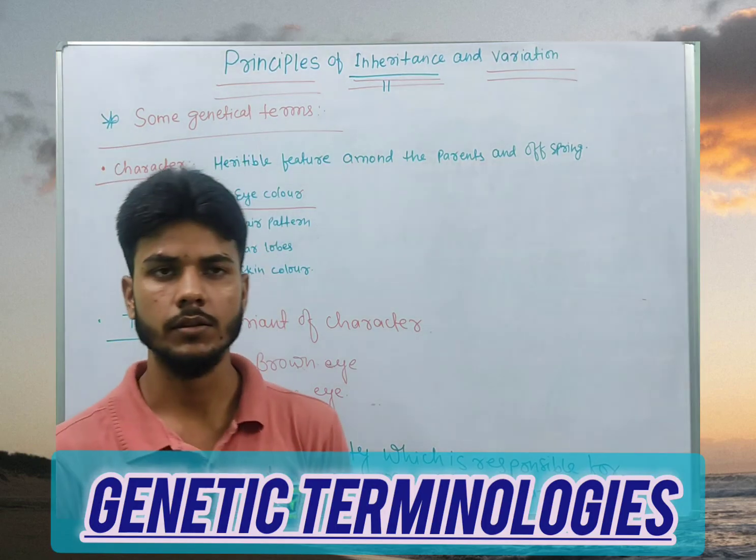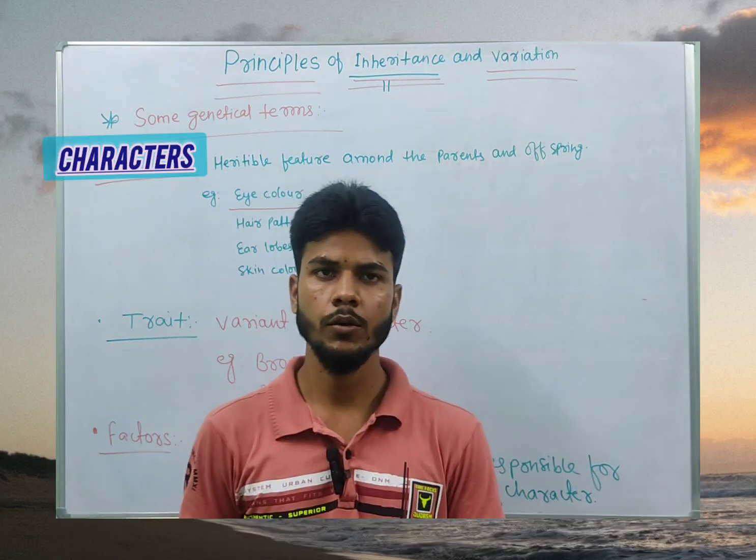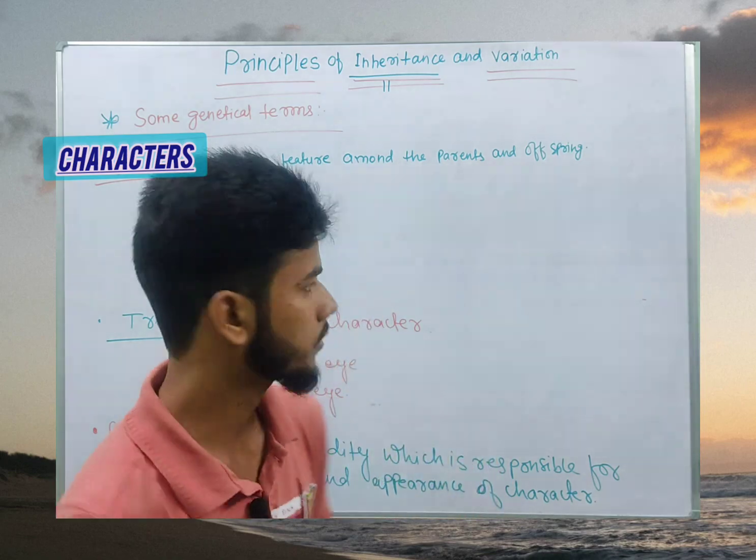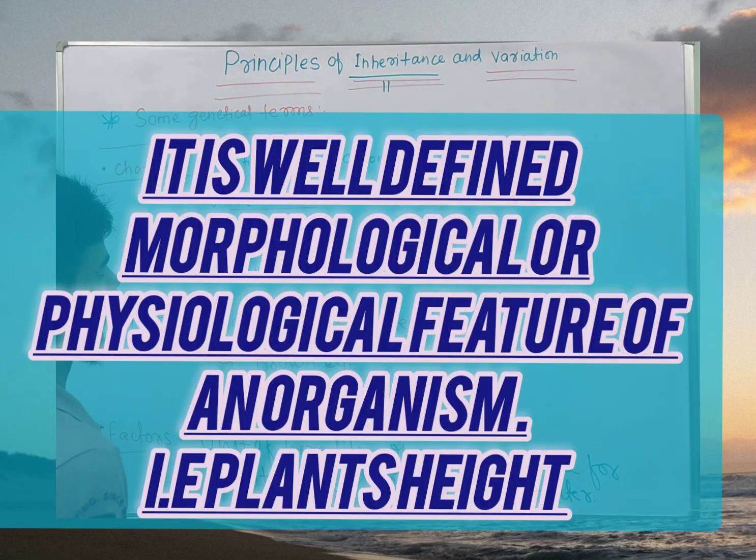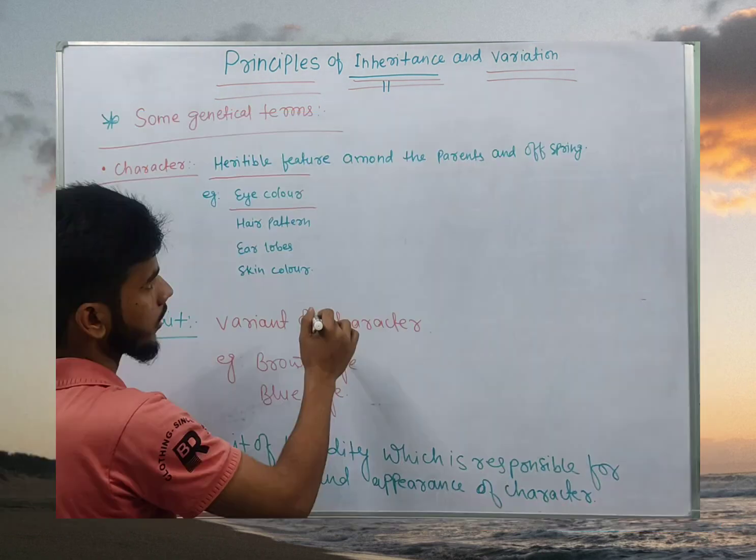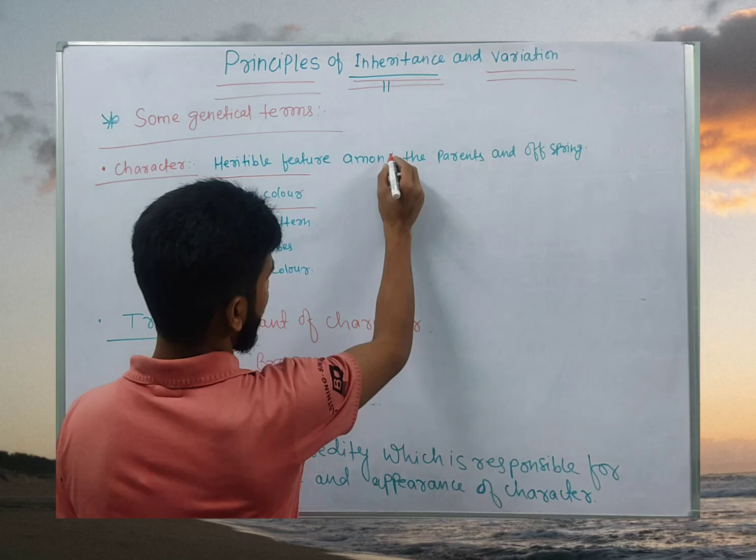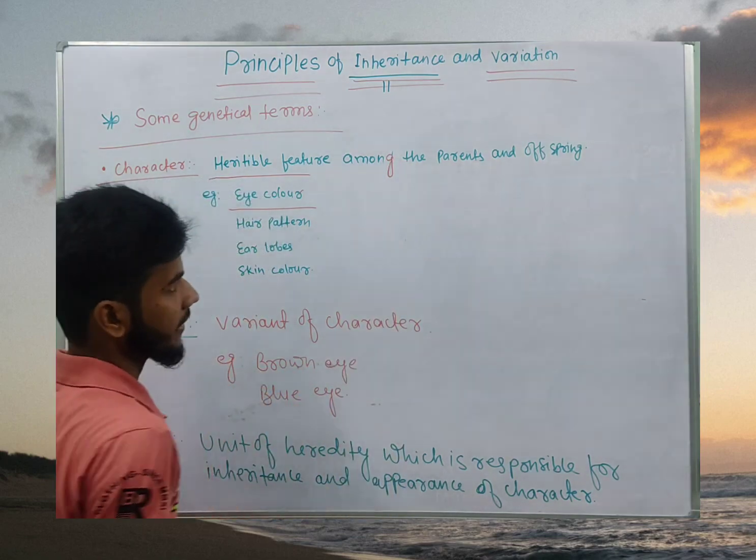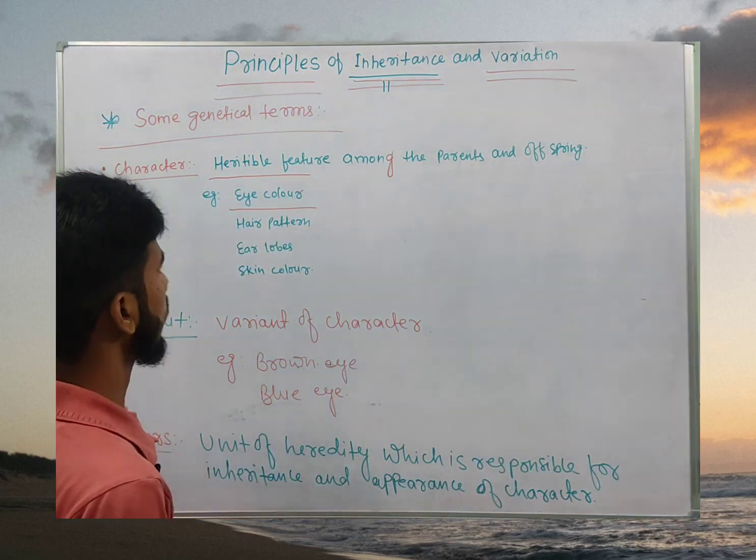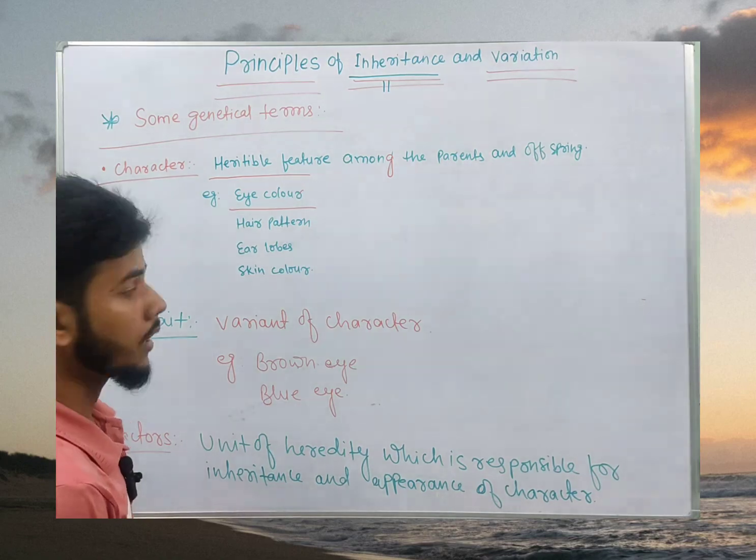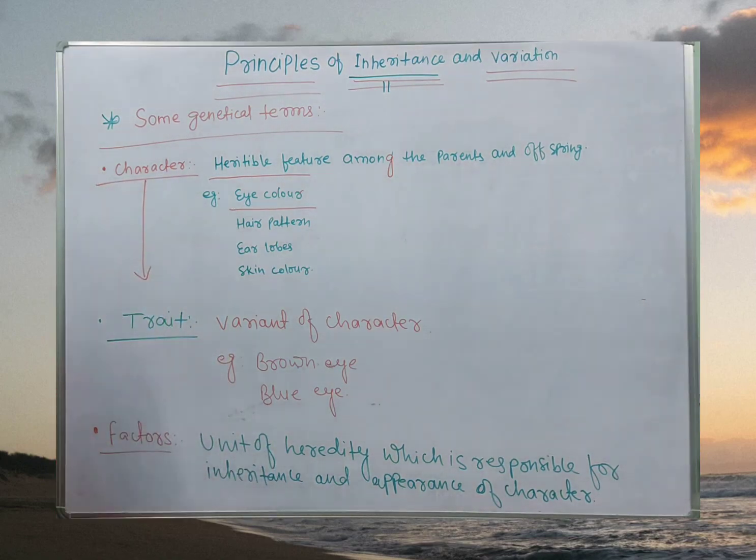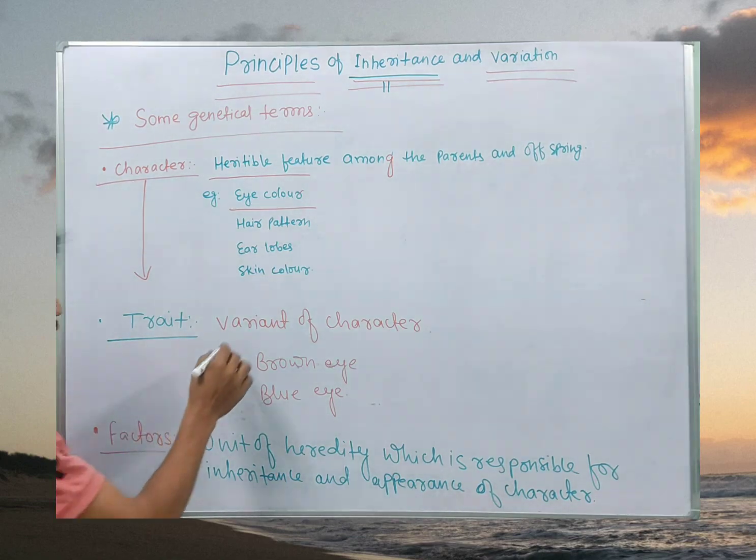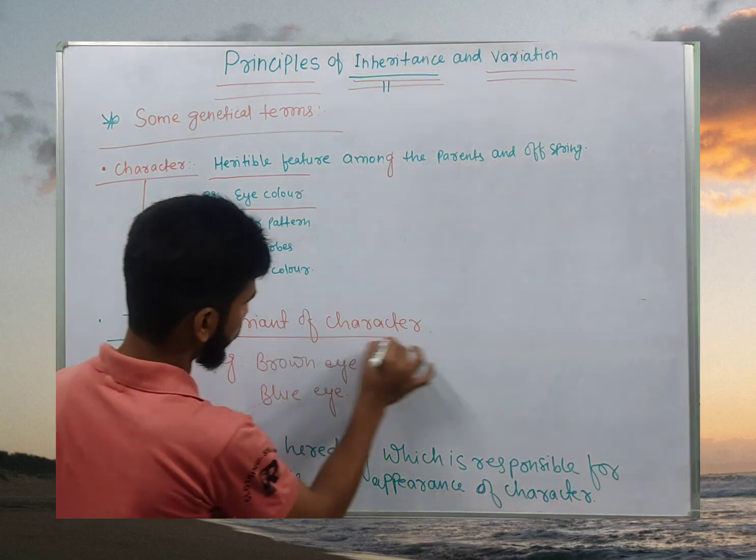So we have some genetical terms. First of all, we are going to discuss about character. What do you mean by character? Character means any heritable features among the parents and offspring is called as characters. And characters ishika alag-alag variants alag-alag form ko hum log kya bolte hain, treats bolte hain.